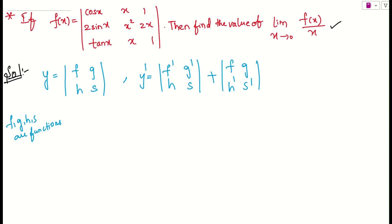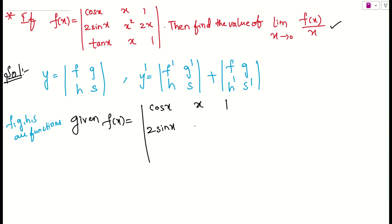Now let us come to our question. We have f(x) as a 3×3 determinant: first row is cos x, x, 1; second row is 2 sin x, x², 2x; third row is tan x, x, 1. We want limit x tends to 0 of f(x)/x. For finding this, we will simply find f'(x) — that is, the derivative of f(x).